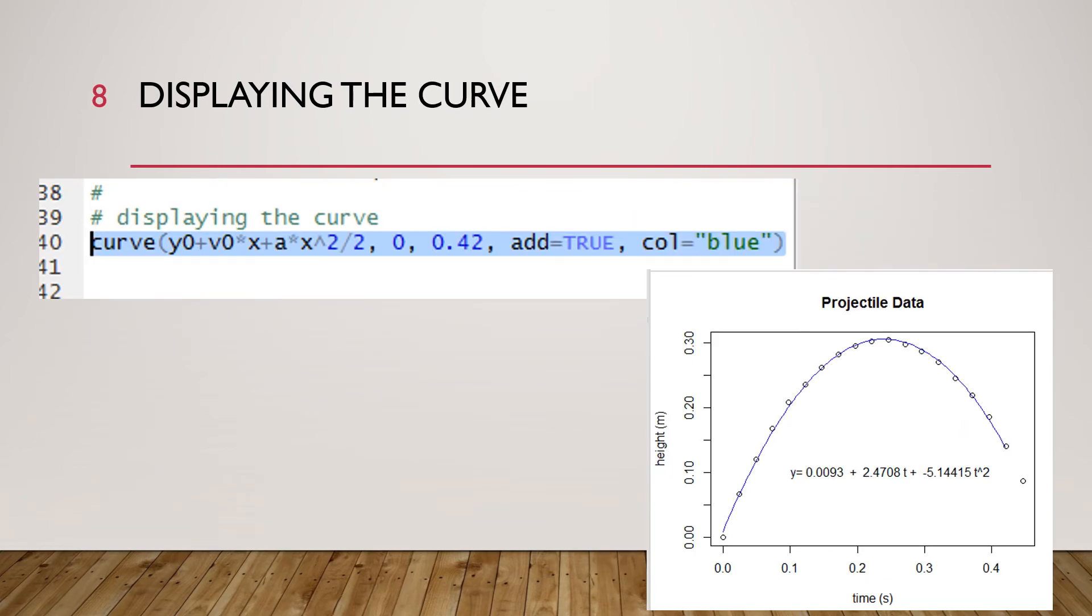Next we want to display our fit curve right on the chart and so we're going to use the curve method to do that. Remember the first argument of the curve method is the function we want to plot and its variable should be x. And so that is y0 plus v0 times x, remember to make multiplications explicit, so y0 plus v0 star x plus a star x caret 2 to get that x squared and divide that by 2.